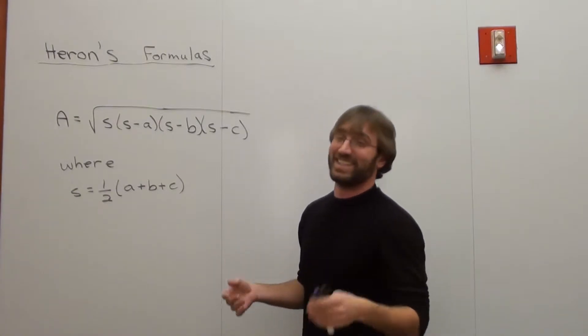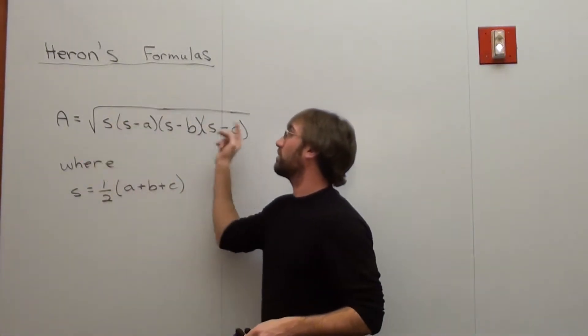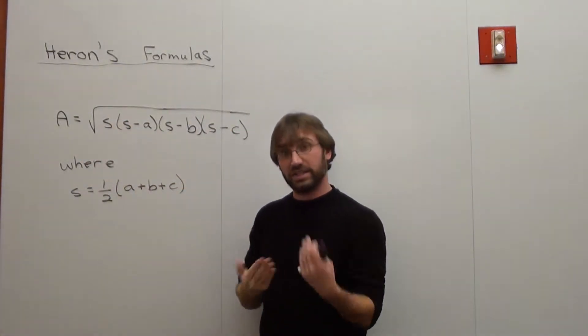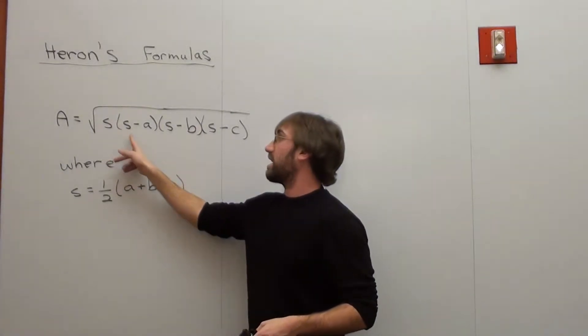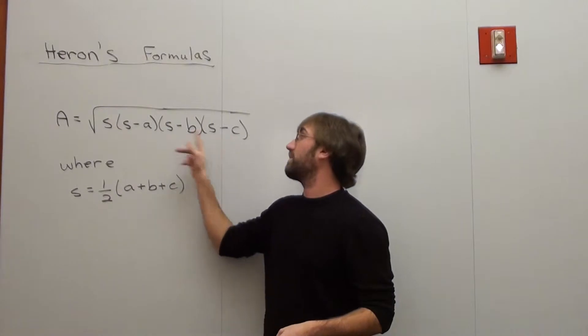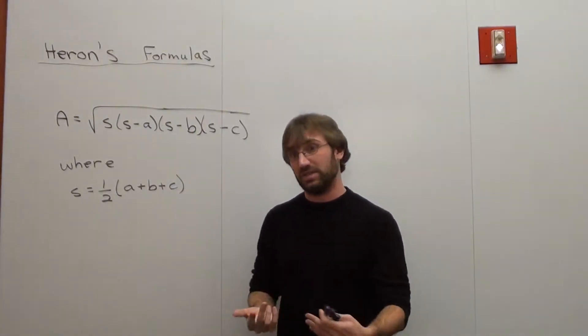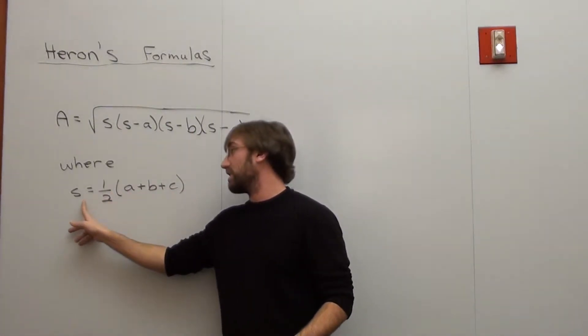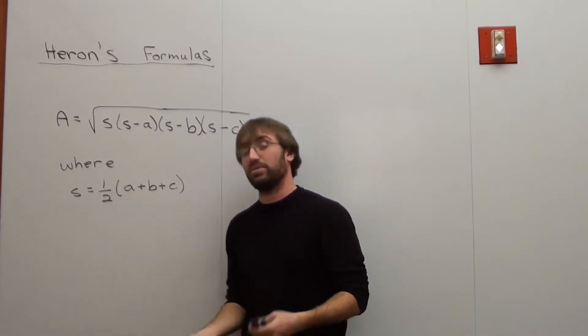It basically states that the area of a triangle equals the square root of something called S, where S is the semi-perimeter. It's S times the quantity S minus A times the quantity S minus B times the quantity S minus C. A, B, and C are all respective sides of a triangle. S actually is one-half times the quantity A plus B plus C.